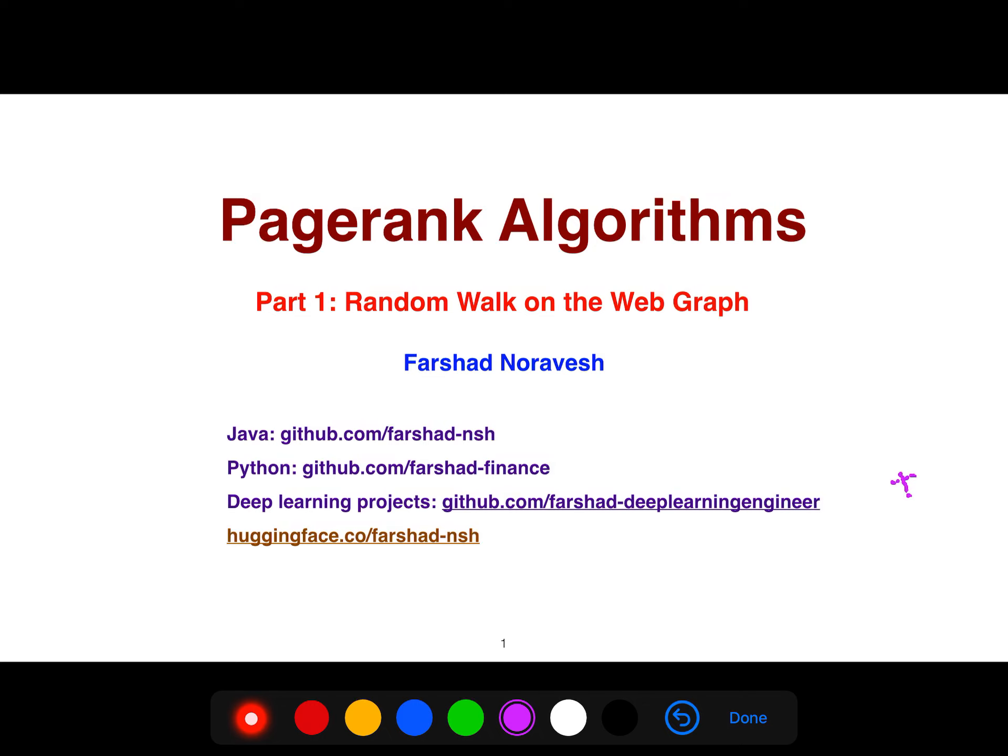In this video, I'm going to be explaining the PageRank algorithm, specifically random walk on the web graph. This is very important. There are many variants, hundreds of variants of PageRank algorithm that are also very important for the next generation of graph neural networks, graph representation algorithms, and many other applications.